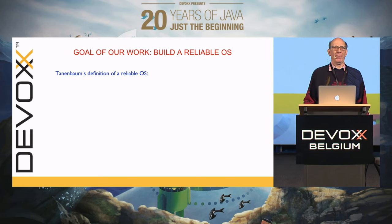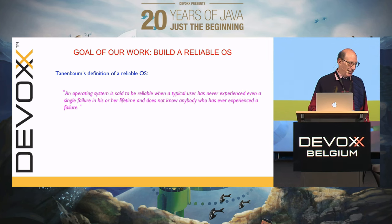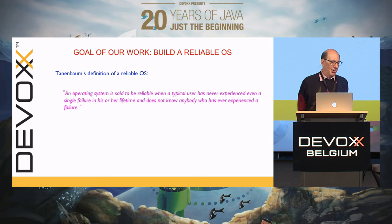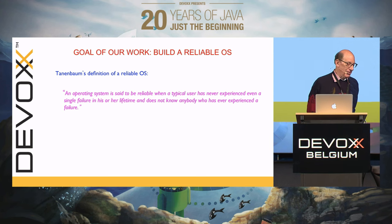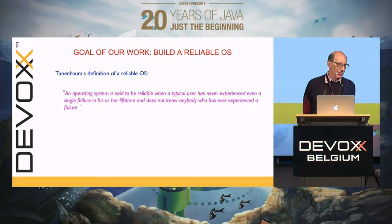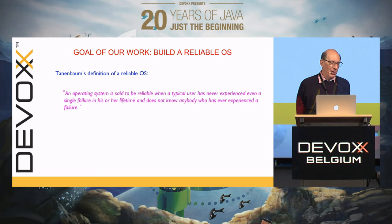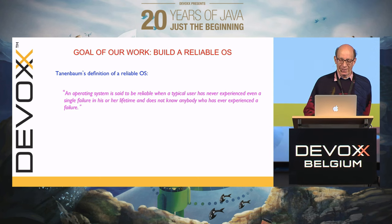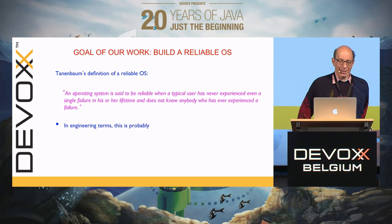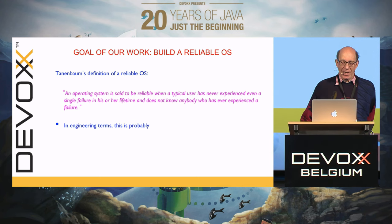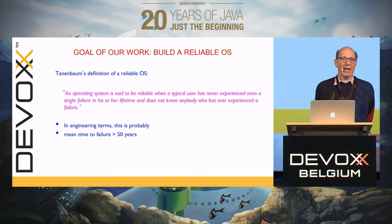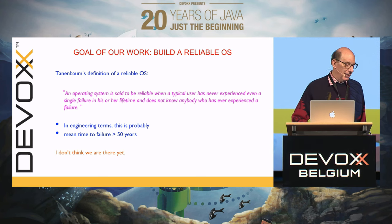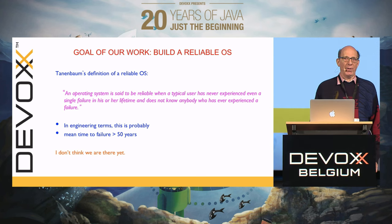Let me give you my definition of a reliable operating system. An operating system is said to be reliable when a typical user has never experienced a single failure in his or her lifetime and doesn't know anybody who's ever experienced a failure. In engineering terms, this might be mean time to failure of 50 years or something like that. I don't think we're there yet.